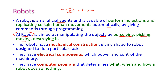These types of robots are used in industries, and robots have mechanical constructions through which we can give shape to the robot based on a particular task. Robots also have electrical components through which we can give power and control the machinery. Most importantly, robots have computer programs through which the robot can determine what, when, and how it does something. The robot will be controlled by using computer programs or algorithms.